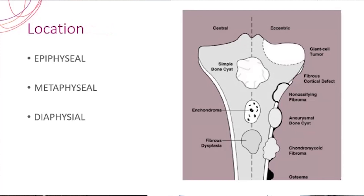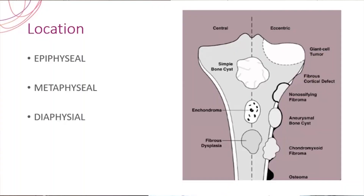Why should you say the location precisely — epiphyseal, metaphyseal, or diaphyseal? Clear cell chondrosarcoma, chondroblastoma, and giant cell tumor are very common in the epiphyseal region to begin with. But if it is going to be an osteochondroma or osteosarcoma, most of them are usually in the metaphysis. While if it is Ewing sarcoma or osteoid osteoma, it is usually in the diaphyseal region. So a cautious word about which part of the bone is actually involved is very important.